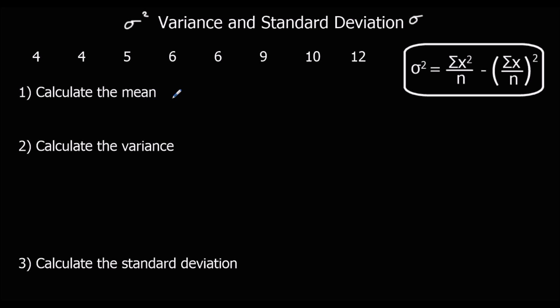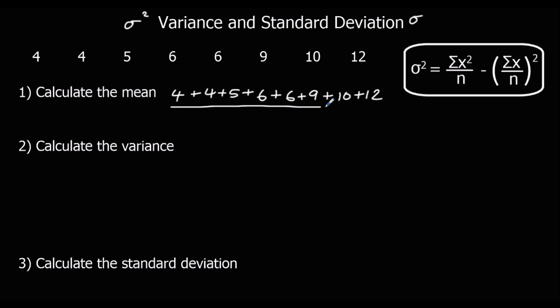You probably know from your previous studies that to find the mean, we add all the numbers up and divide by how many there are. So in this case we've got 4 + 4 + 5 + 6 + 6 + 9 + 10 + 12, divided by 8, which gives us a mean of 7.